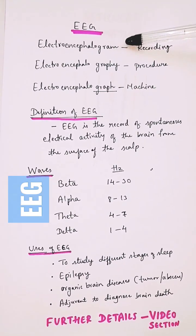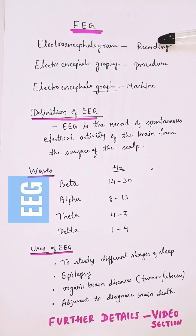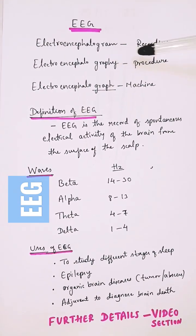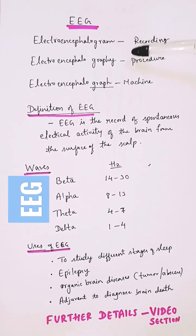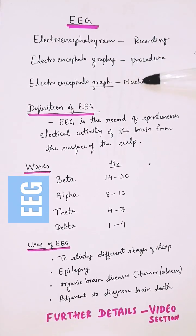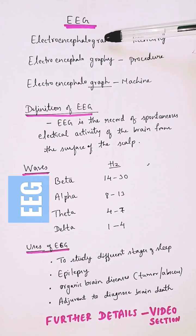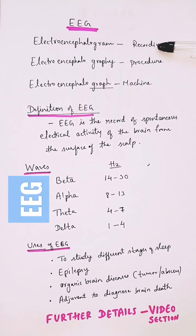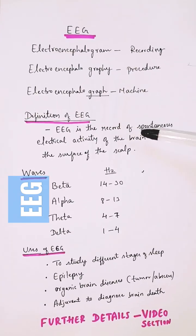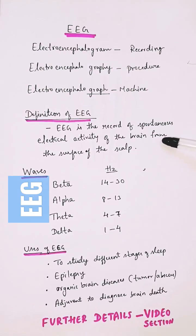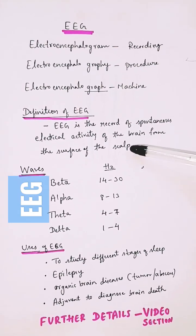EEG stands for electroencephalogram. Electroencephalography is the procedure of recording, and electroencephalograph is the machine used. EEG is the record of spontaneous electrical activity of the brain taken from the surface of the scalp.